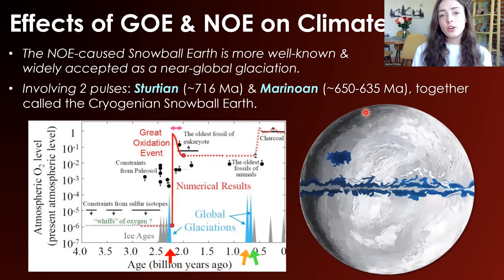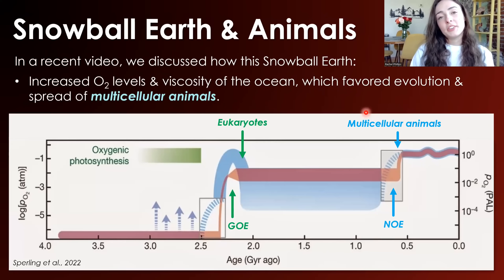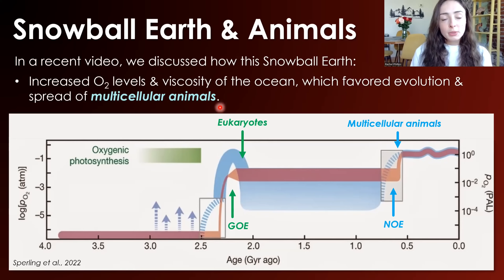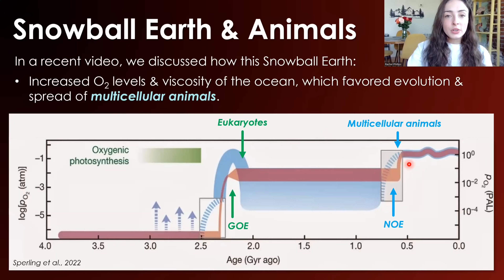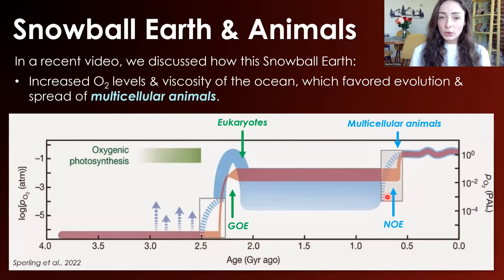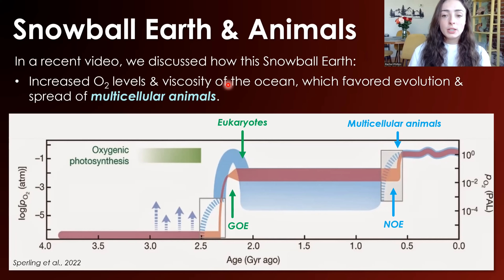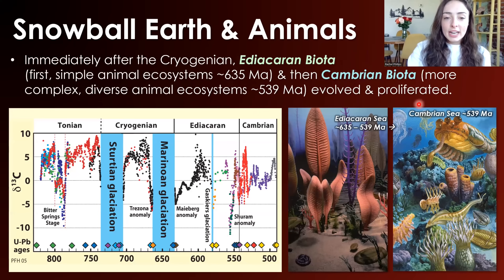Both of these pulses together are called the Cryogenian Snowball Earth. As I mentioned, this event increased oxygen levels — it was an oxygenation event — and the viscosity of the ocean, or the thickness of the seawater, to the point that it favored the evolution and spread of multicellular animals. Oxygen is important for animal evolution, but it's thought that before the NOE, oxygen levels could have already allowed animal evolution, so it's not necessarily the oxygen rise alone that caused the proliferation of animals in the Ediacaran and Cambrian explosions.